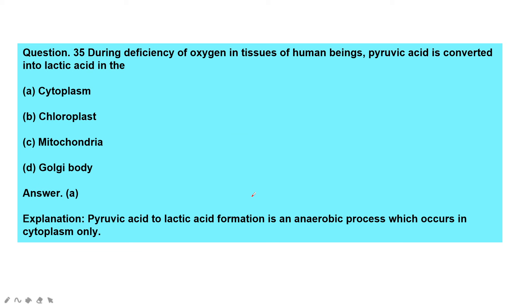Question: During deficiency of oxygen in human tissues, pyruvic acid is converted into lactic acid in — cytoplasm, chloroplast, mitochondria, or Golgi body? The answer is option A, cytoplasm. The conversion of pyruvic acid to lactic acid is an anaerobic process which occurs only in the cytoplasm.